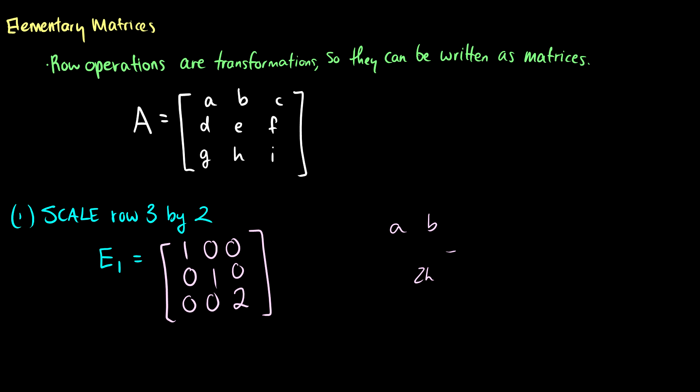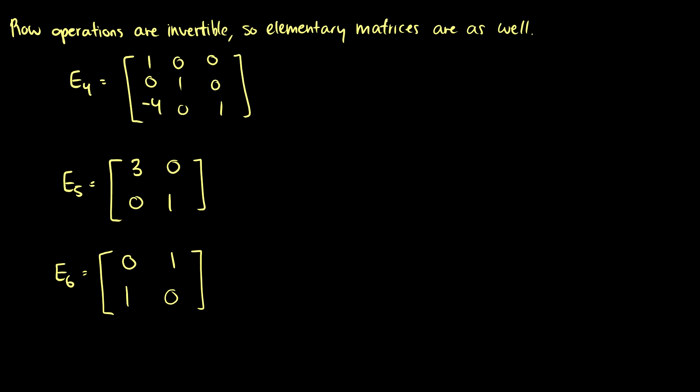I'm going to show you a few examples of the operations and then how we get our matrices. And not only that, but because these row operations are invertible, we're going to know that these elementary matrices are invertible as well. So let's take a look. What does E4 do here, and what operation is this?